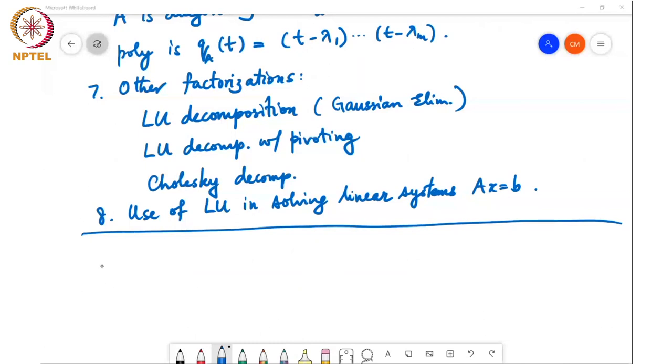Now we move on to Chapter 4 in Horn and Johnson, which is Hermitian and Symmetric Matrices.